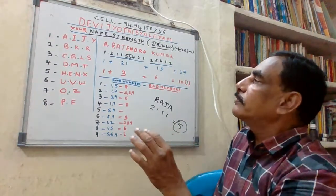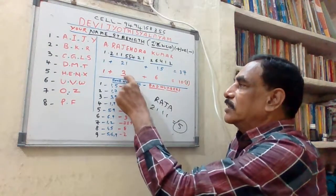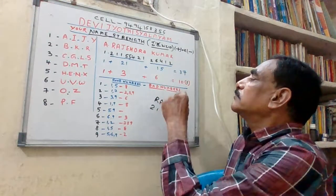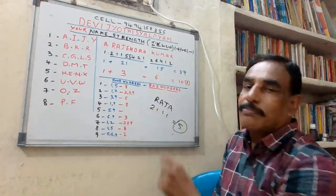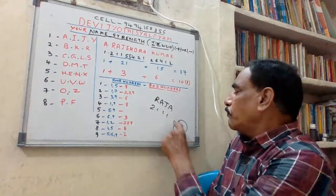If anybody calls me Rajendra, my name strength is 21, which means 3. If somebody calls me Kumar, my name strength is 6. But actually my friends call me Raja. Raja is 2, 1, 1, 1, 5.